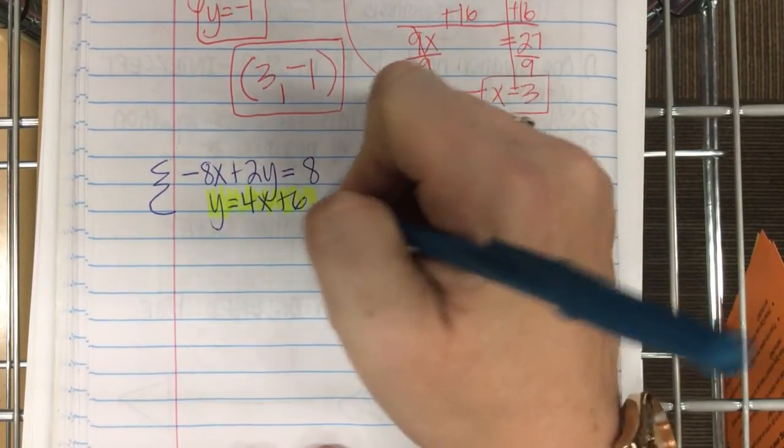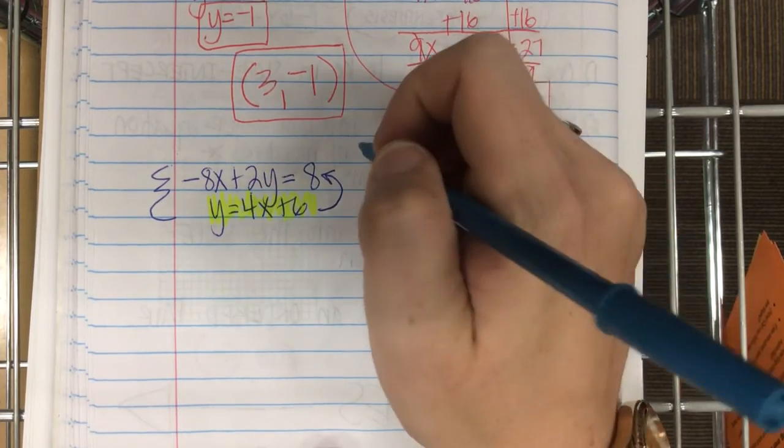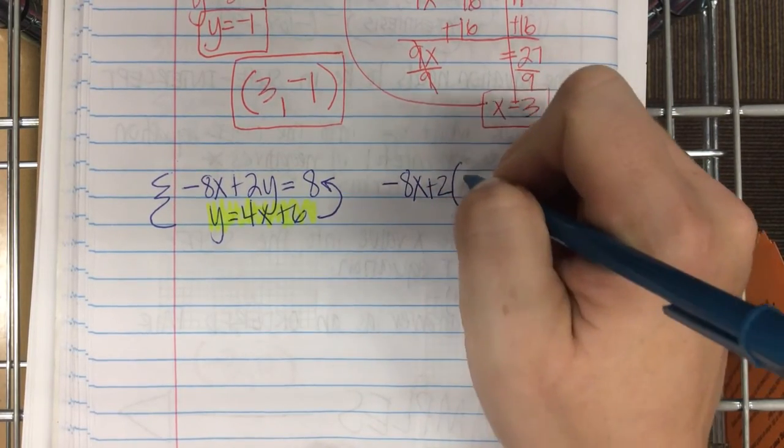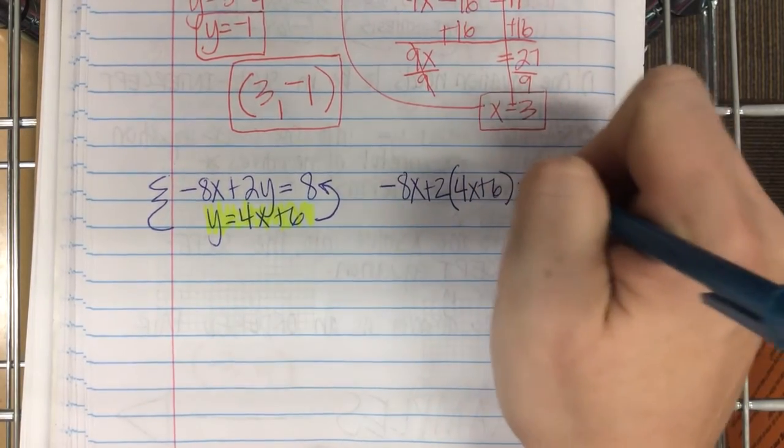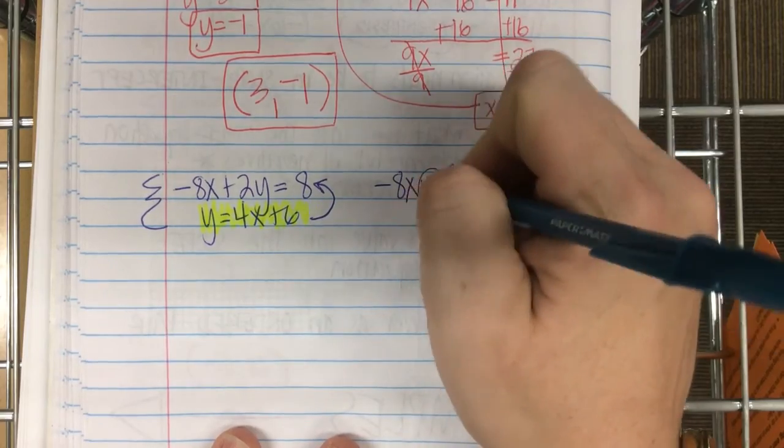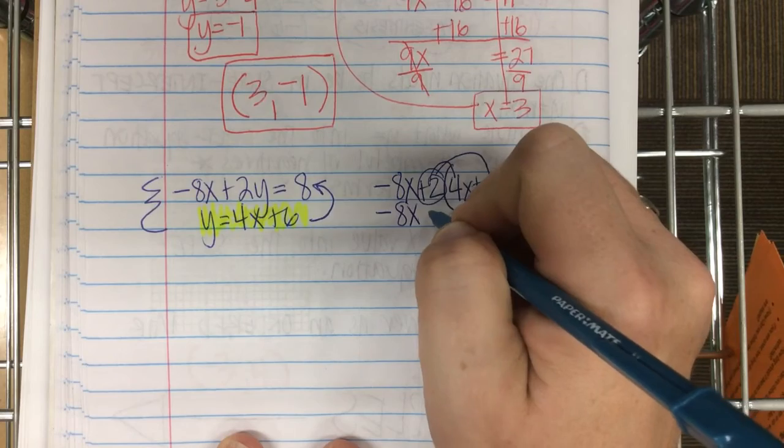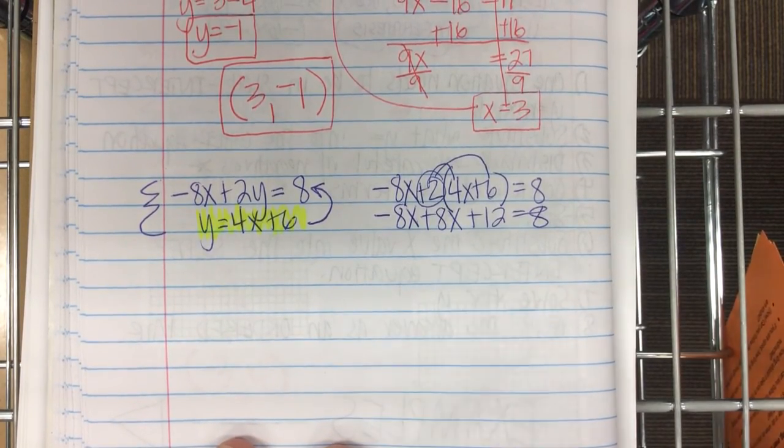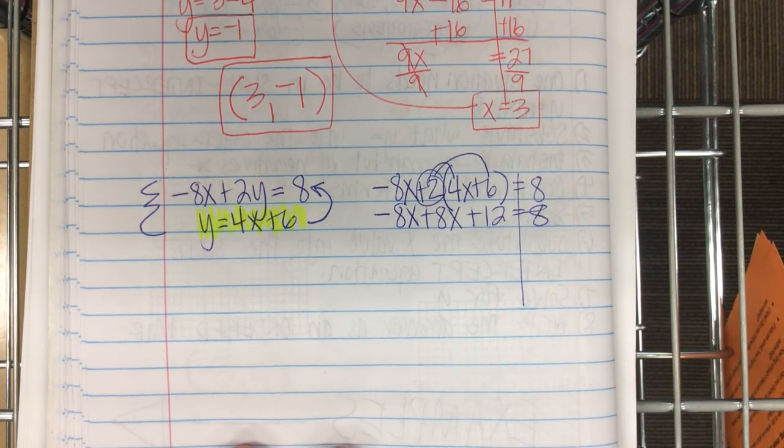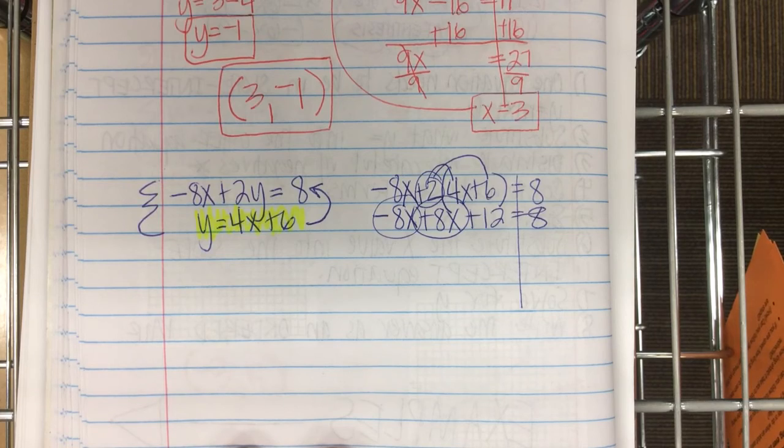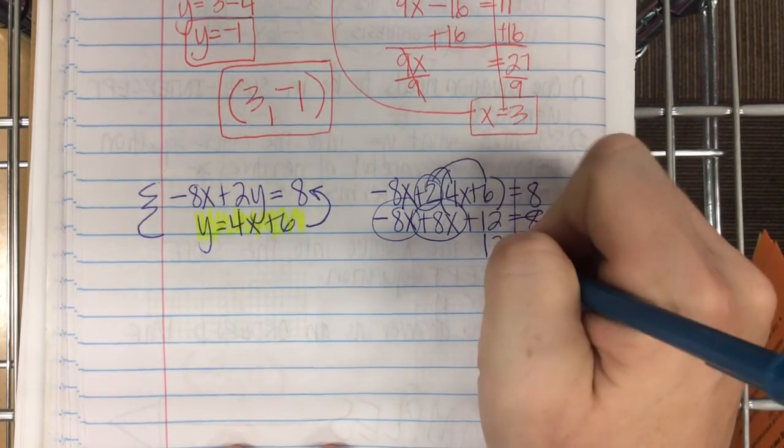Alright, so that means this equation goes into the top equation this time. So instead of y, so I have negative 8x plus 2, and instead of y, I'm putting 4x plus 6 equals 8. I substitute my value. After you substitute what y equals into the other problem, you distribute. So negative 8x plus 8x plus 12 equals 8. Then we combine like terms. What goes together? Negative 8x. Positive 8x. What happens to them? They cancel out. They're 0. So what am I left with? Positive 12 equals 8.